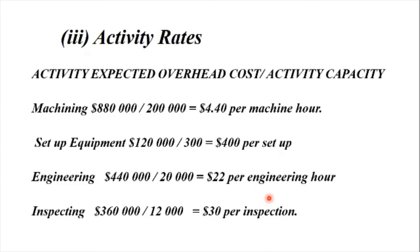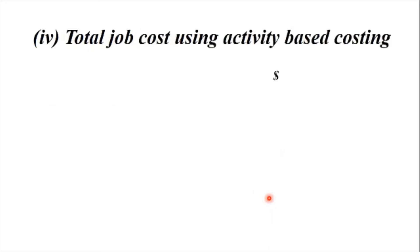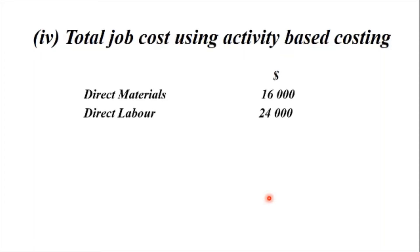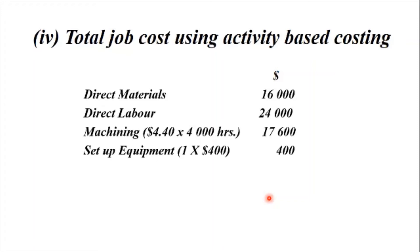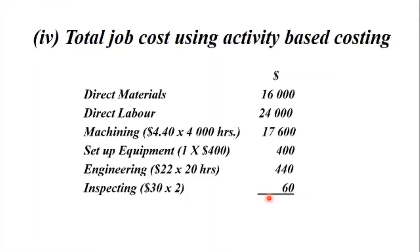Now we can take the activity rates and use them to determine the job cost using ABC costing. Part 4 requires the job cost using ABC. We have direct materials $60,000 and direct labor $24,000 — same as under traditional costing. Then machining: $4.40 by 4,000 hours gives $17,600. Setup: 1 setup by $400 gives $400. Engineering: $22 by 20 hours gives $440. And inspecting: $30 by 2 inspections gives $60. When we add them together, we get $102,500.